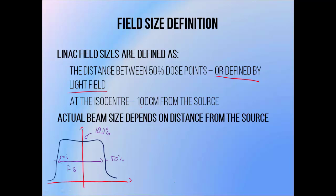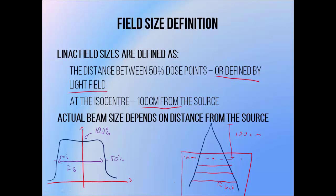So when you use a treatment planning system to calculate the dose of say a 10x10cm field, the distance between the 50% dose points might not be exactly 10cm, but it will be the same as for a field delivered when the light field says that the field is 10x10cm. A treatment planning system, even a manual one that is commissioned properly, will encourage you to use the correct field sizes to meet the goals of your treatment. It's also worth noting that the field size needs to be defined at a specific distance from the source, like 100cm, because the beam is diverging and the field size will change with distance.